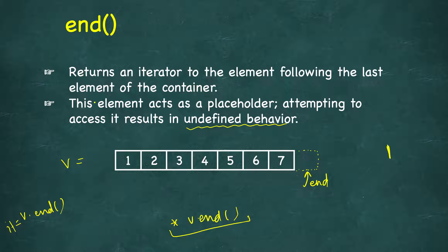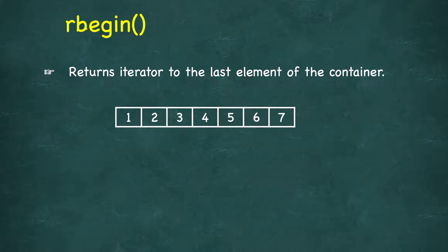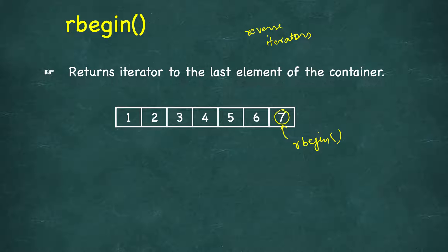These were for forward iterators. Some containers also support reverse iterators — not all containers do. For example, forward_list is a singly linked list and does not support reverse iterators. Reverse iterators traverse from end to begin. rbegin is the reverse equivalent of begin — it returns an iterator pointing to the last element of the container, which is the first element in the reverse direction.